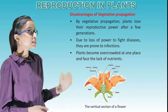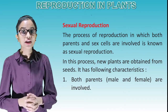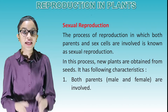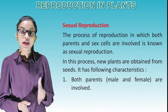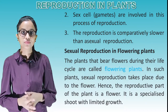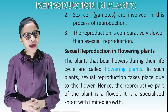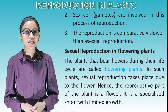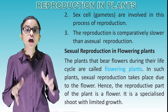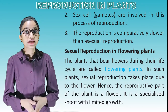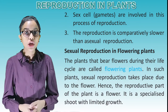Sexual reproduction: The process of reproduction in which both parents and sex cells are involved is known as sexual reproduction. In this process, new plants are obtained from seeds. Both male and female parents are involved. Sex cells called gametes are involved in this process. The reproduction is comparatively slower than asexual reproduction. The plants that bear flowers during their life cycle are called flowering plants. In such plants, sexual reproduction takes place due to the flower. Hence, the reproductive part of the plant is a flower — a specialized shoot with limited growth.